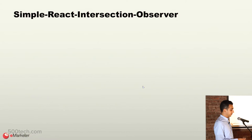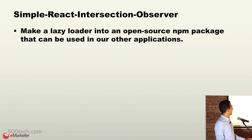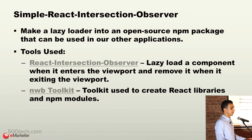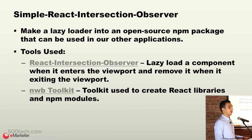At eMarketer, I created an npm package called simple-react-intersection-observer — that's the observer wrapper that you saw wrapping the div we just lazy loaded. We wanted to make a lazy loader into an open source npm package that can be used not only in our other applications, but also to contribute to the open source community so any developer can use it. Some of the tools I used were react-intersection-observer, which lazy loads a component when it enters a viewport and removes it when the viewport is exited. I also used the nwb toolkit, which is used to create React libraries and npm modules — I highly recommend it.